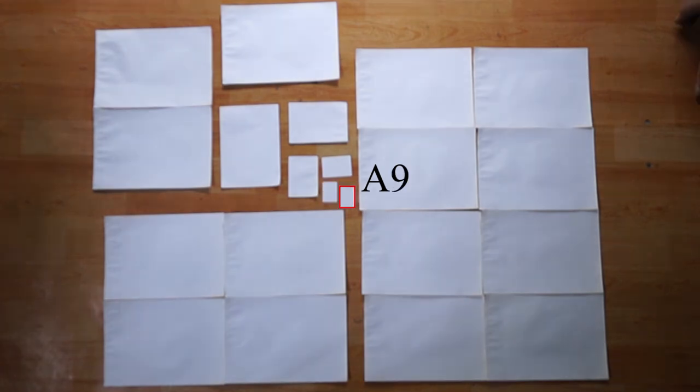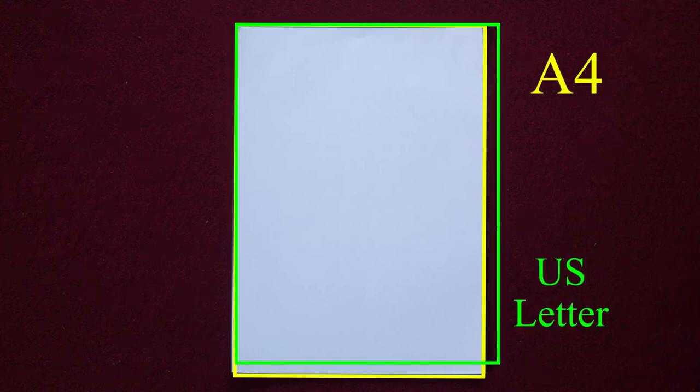A9 is probably good for sticker labels and A10 for, I don't know, postage stamps or something. The A4 paper, by the way, is the most widely used paper in the world and is actually quite close in size to the most widely used American paper, the US letter size, which is a tiny bit shorter and stouter than A4.